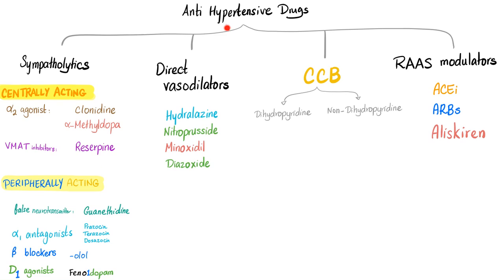Here are the antihypertensive medications. We have sympatholytics, direct vasodilators, calcium channel blockers, and renin-angiotensin-aldosterone modulators. Sympatholytics are divided into centrally acting — alpha-2 agonists such as clonidine and alpha-methyldopa, and VMAT inhibitors such as reserpine — and peripherally acting, which include a false neurotransmitter like guanethidine, alpha-1 antagonists like prazosin, terazosin, doxazosin, and tamsulosin, beta blockers ending in -olol, and D1 agonists — the famous phenoldopam, which is the topic of today's video.